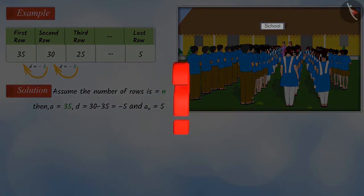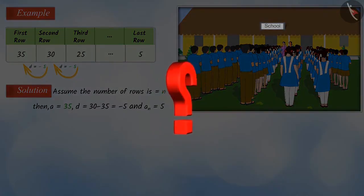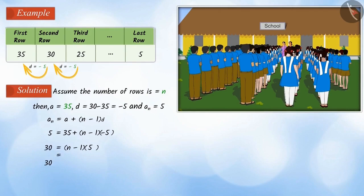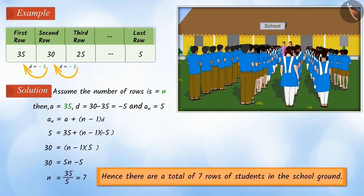Can you tell me how we will do that? Using the pattern and the general form of AP, we can solve the problem and obtain the value of n to be 7. Hence, there are a total of 7 rows of students in the school ground.